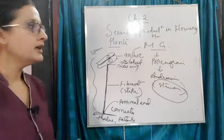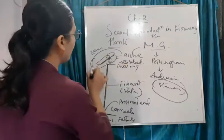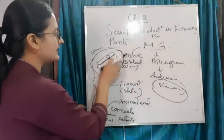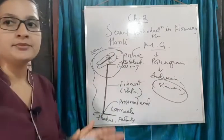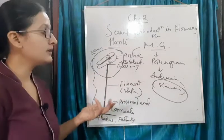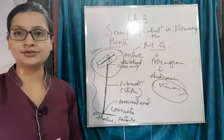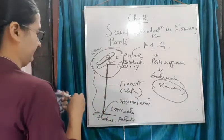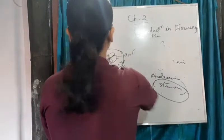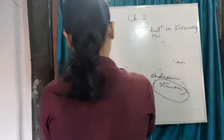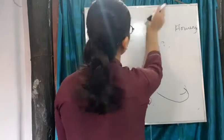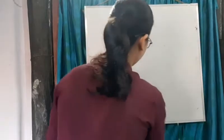Now we will learn the internal structure of the anther. There are many things inside it. Let us see what it looks like when we cut the anther - as I told you the anther is bilobed, and we are going to learn in depth.